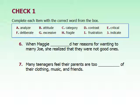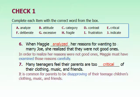'When Maggie blanked her reasons for wanting to marry Joe, she realized they were not good ones.' She has a bunch of reasons and is carefully studying the problem — what word means to look at something carefully? 'Many teenagers feel their parents are too blank of their clothing, music, and friends.' Do their parents like it, or do they find faults with it? The first answer is analyzed — she carefully studied her reasons. The second is critical — the parents were disapproving.